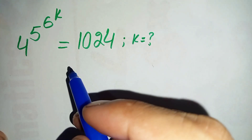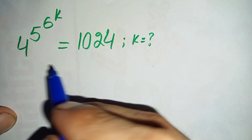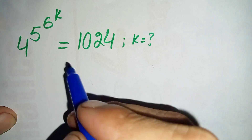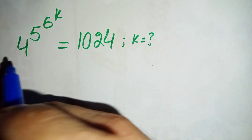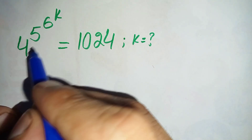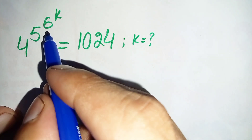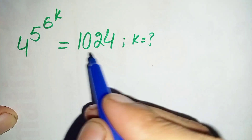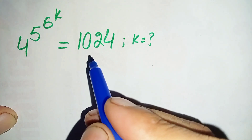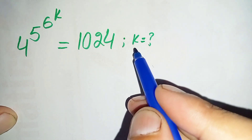Hello everyone, welcome. In this video I'm going to solve this nice exponential equation: 4 raised to power 5, raised to power 6, raised to power k, is equal to 1024. We will try to find the value of k.